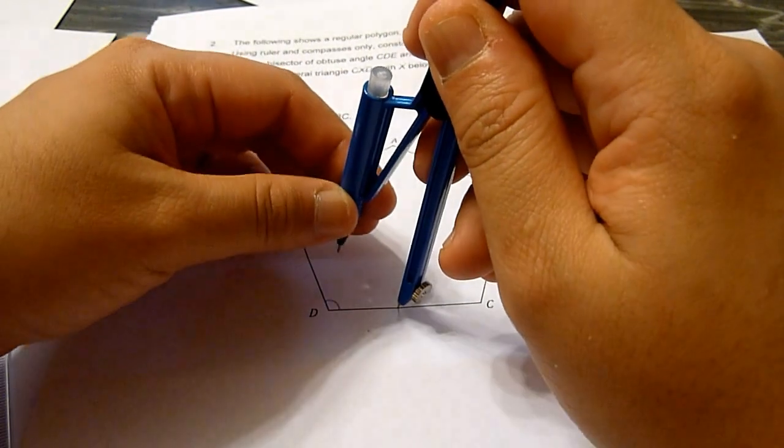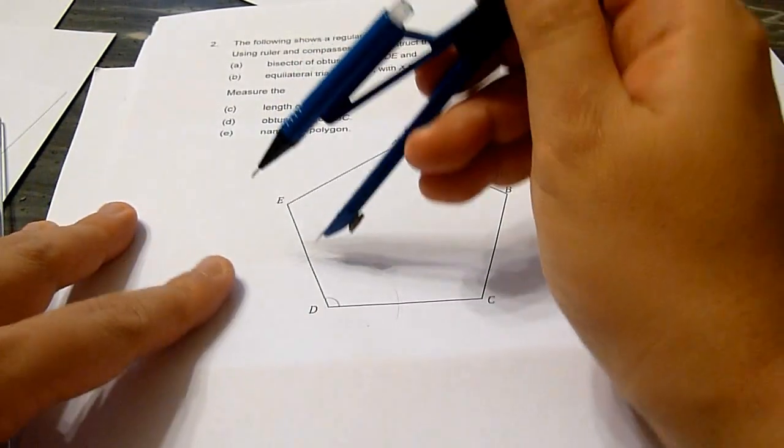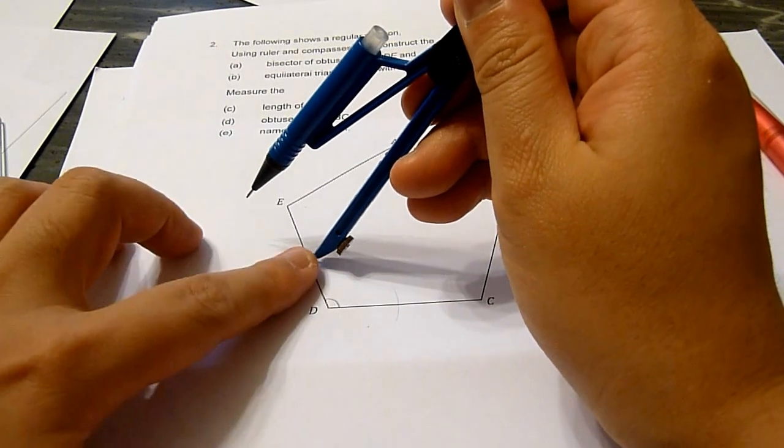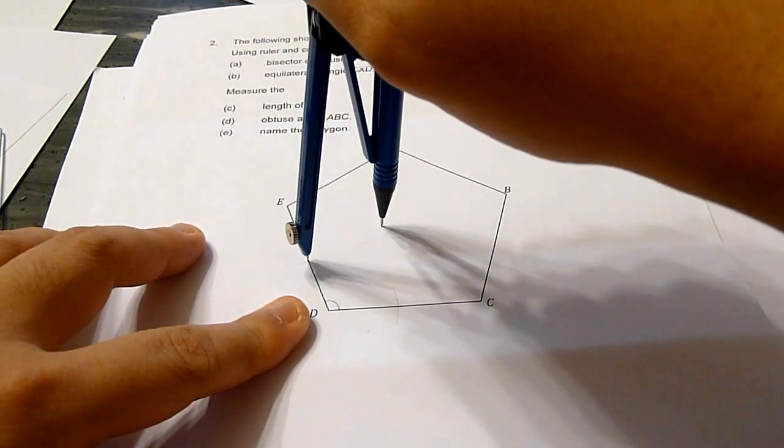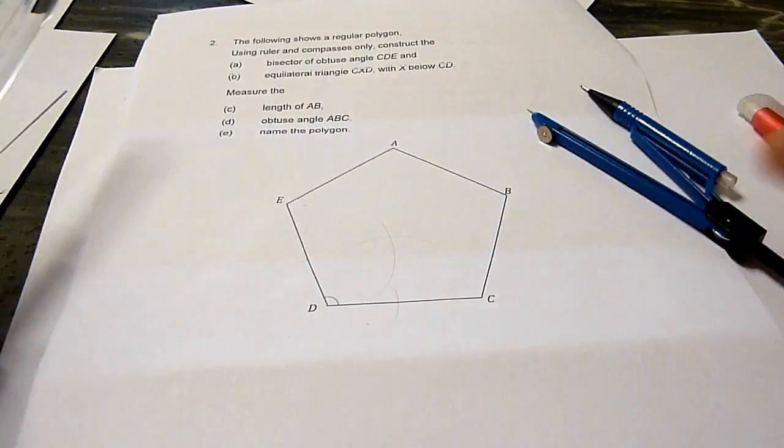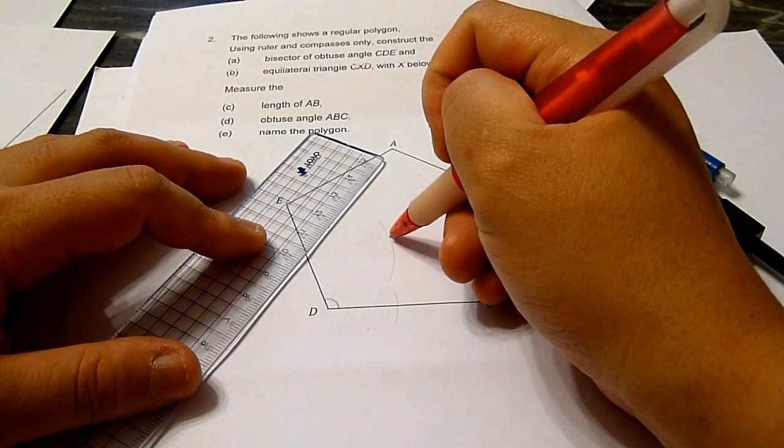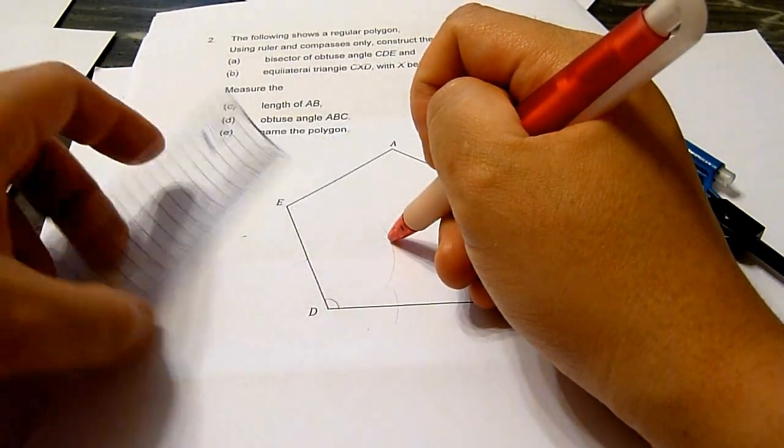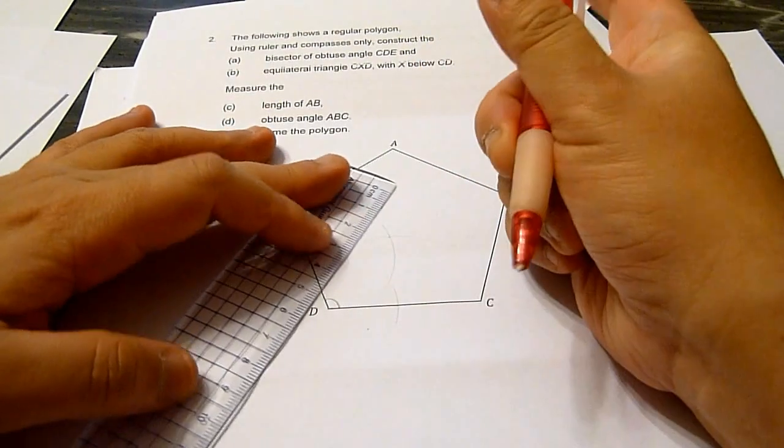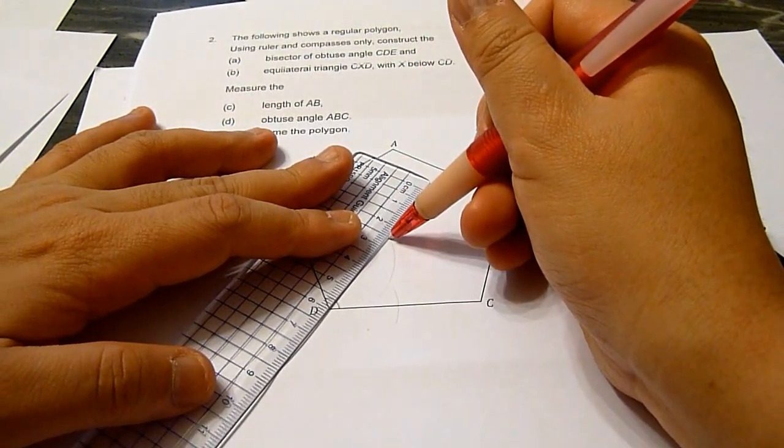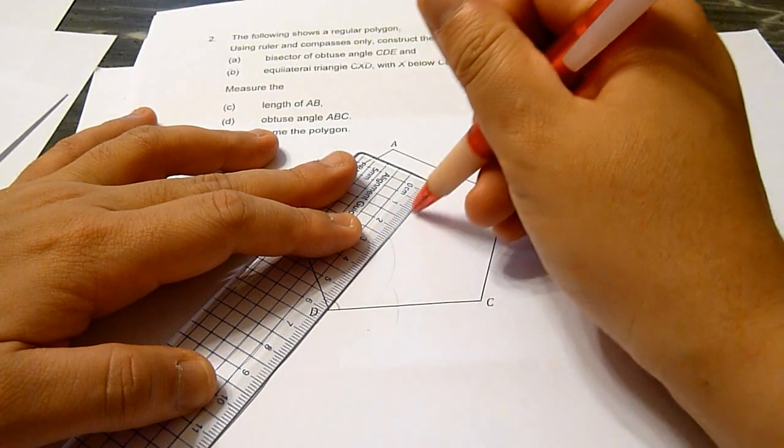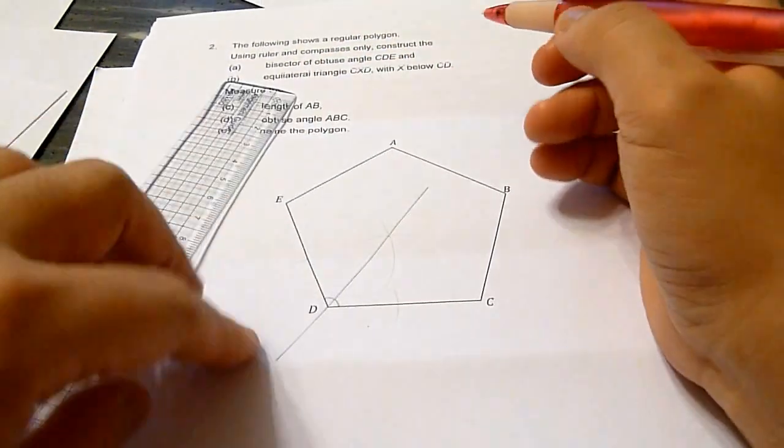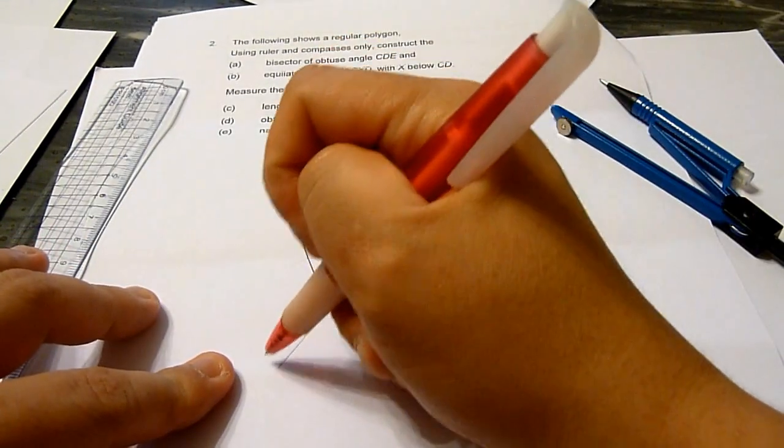We shall draw two arcs, mark them out, and join the intersection point to the angle. This is the angle bisector.